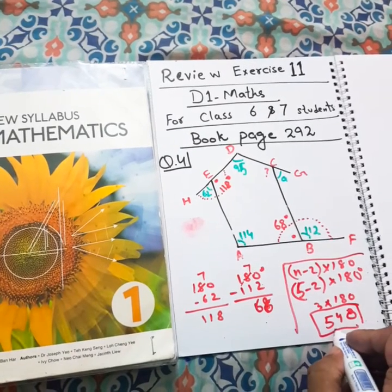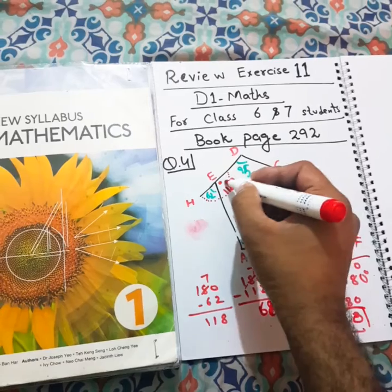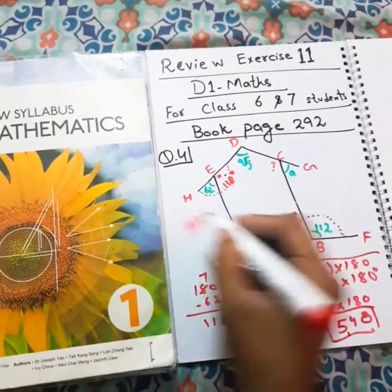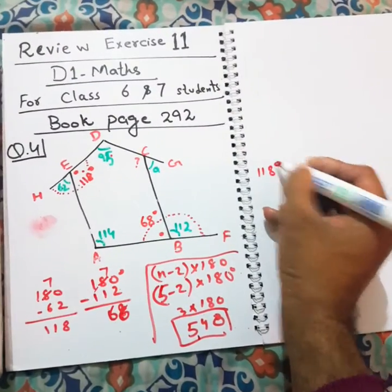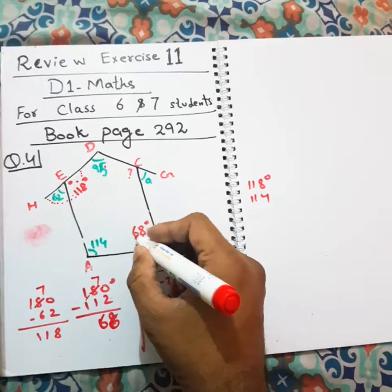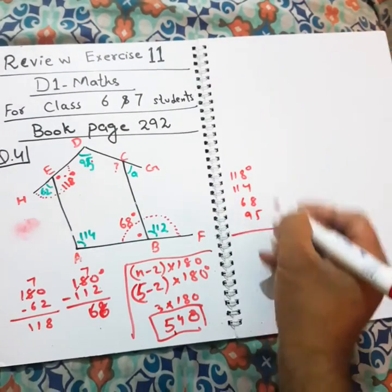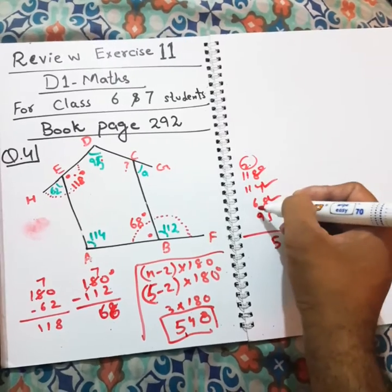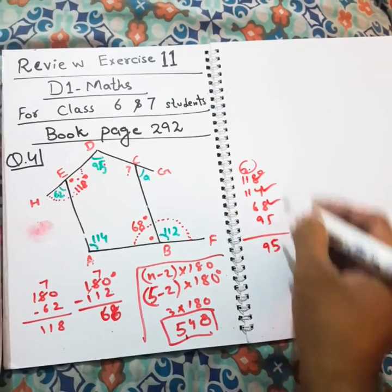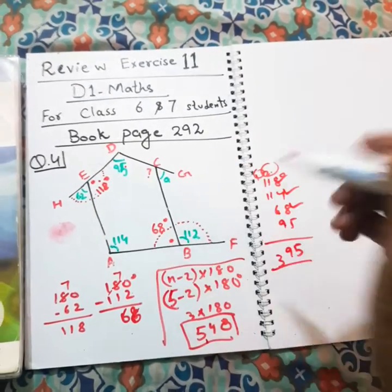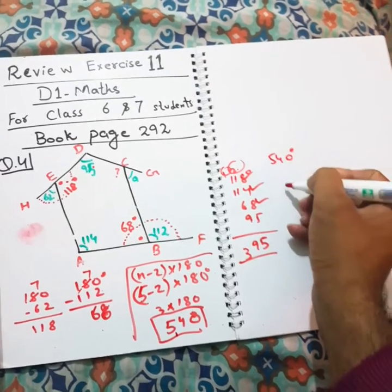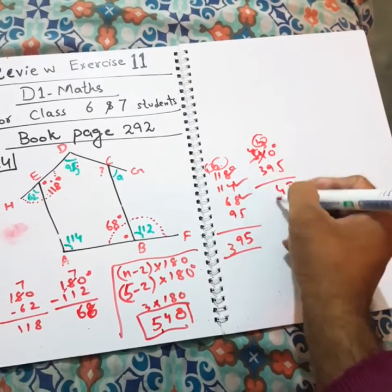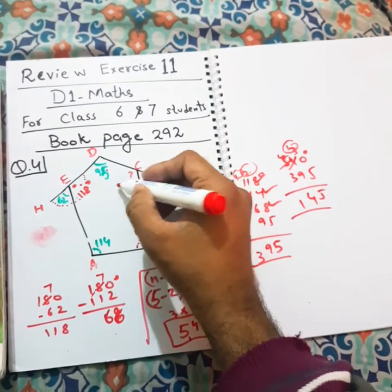From 540 degrees, let me subtract the known angles: 118, 95, 68. Let me find the sum of all the known angles in this pentagon first — 118 degrees, then 114 degrees, 68 degrees, and 95 degrees. Their sum is 395 degrees. We know that from the total of 540 degrees, if 395 is subtracted — 10 minus 5 is 5, 13 minus 9 is 4, and 4 minus 3 is 1 — so that gives 145. This unknown angle is 145 degrees.